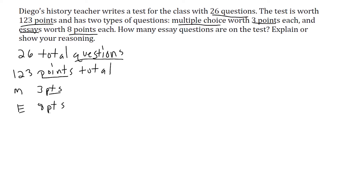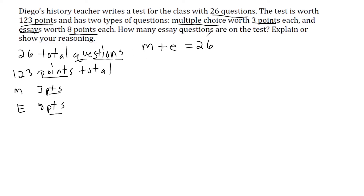Let's write an equation only dealing with the number of questions. We can say M, the number of multiple choice questions, plus E, the number of essay questions, is going to total 26 questions. This is a simple algebraic statement saying that the number of multiple choice questions and essay questions is going to be 26 in total. We don't know what M is yet and we don't know what E is yet.